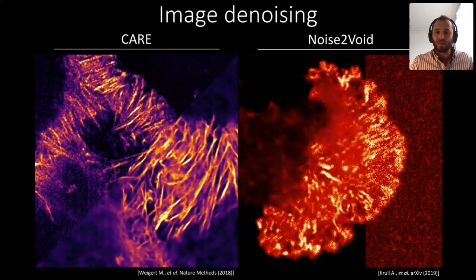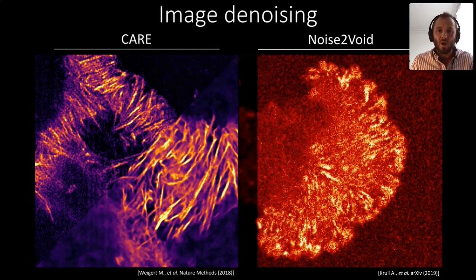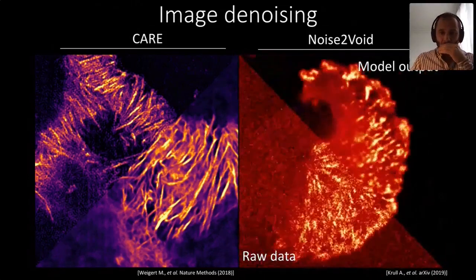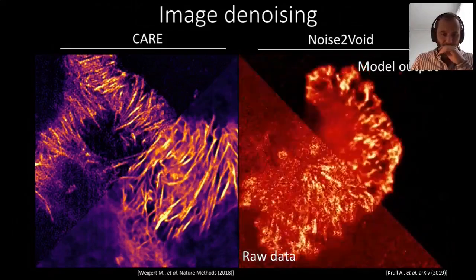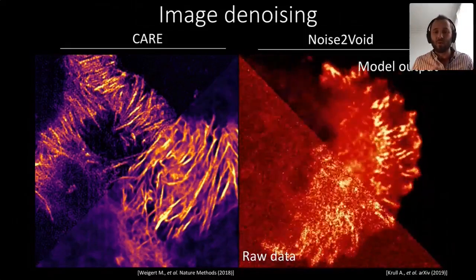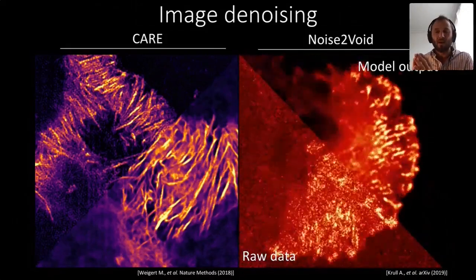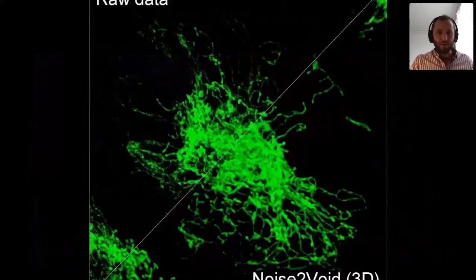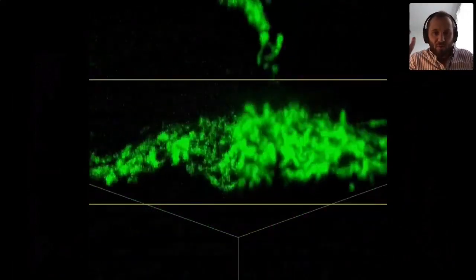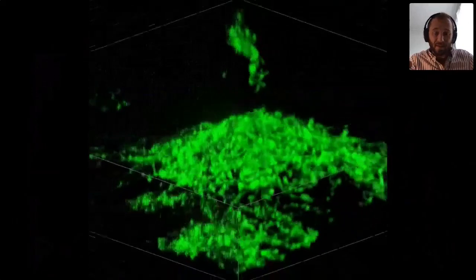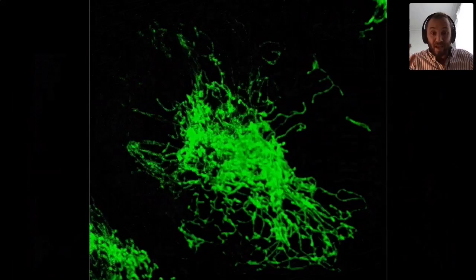We've also implemented Noise2Void for denoising — also extremely powerful, going from low SNR to very high SNR. Crucially, the authors implemented it so cleverly that at the training stage it doesn't even require equivalent output images to train itself. Here's Noise2Void applied to a full 3D time course of super-resolved mitochondrial dynamics imaged with mitotracker — and it works really, really well.